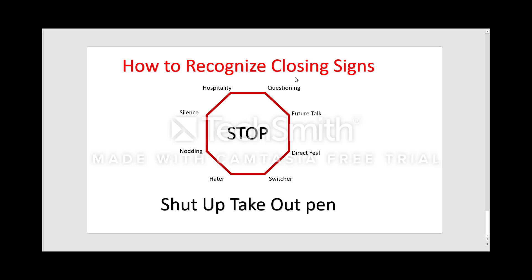The first closing sign is silence. Silence is a very powerful thing if you know how to use it. Sometimes you'll be pitching to a prospect and you keep talking, or you're about to close them, and you notice they're really quiet. What you want to do is the opposite of your instincts — don't throw more information out there or try to spoon-feed them something you think they need to hear.